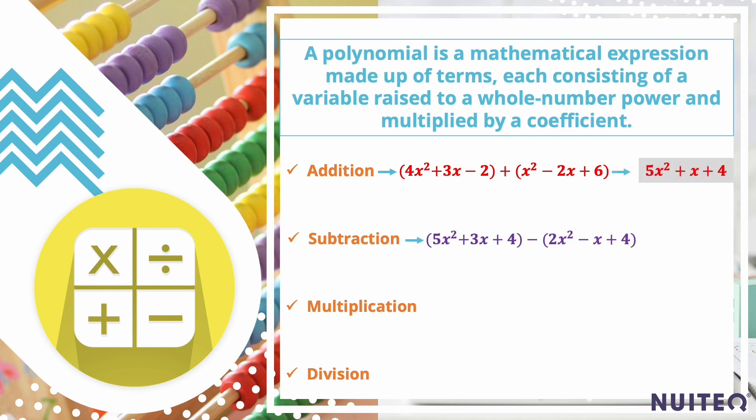To subtract one polynomial from another, change the sign of the terms in the second polynomial and then combine like terms.